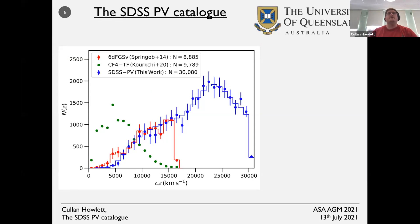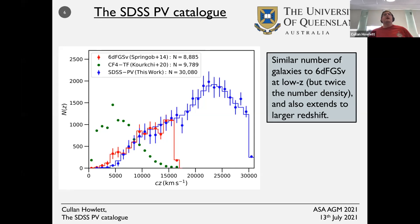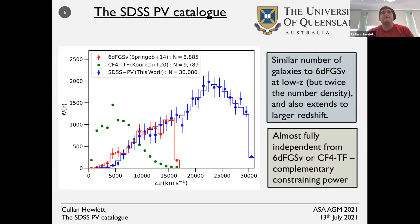The Cosmic Flows data tends to be at low redshift, while 6dF and the SDSS samples push to higher redshift. With this new SDSS data we're pushing up to redshift 0.1, beyond previous catalogues. It has a similar number of galaxies to 6dF at low redshift (below ~0.05), but actually has twice the number density because it's confined to a smaller sky area, and it extends to larger redshift. Being almost fully independent from the other surveys means they have very complementary constraining power.